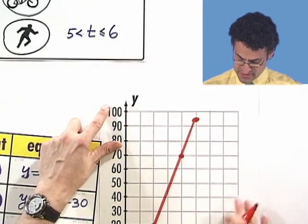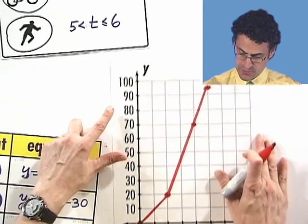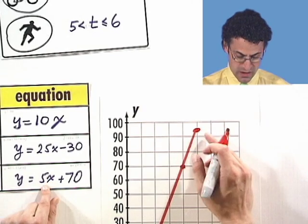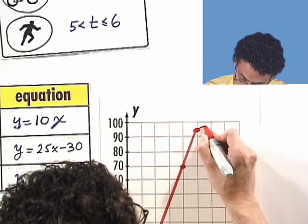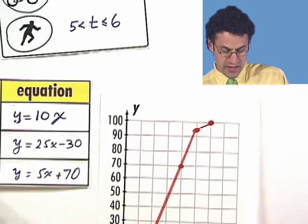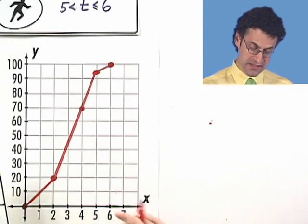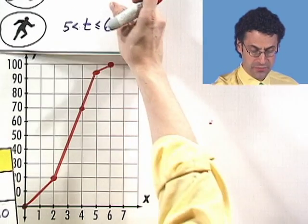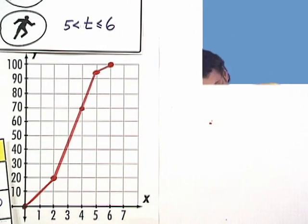And then finally, from 5 to 6, so from 5 to 6 what happens? Well, now I've got a little teeny slope of just 5. And so I just go right up to here and I end at a height of 100. And so this curve represents, in fact, this path.